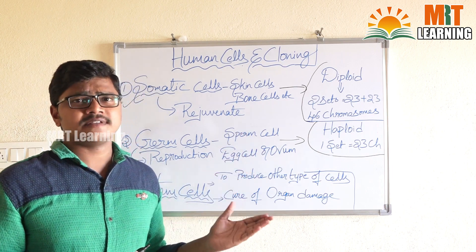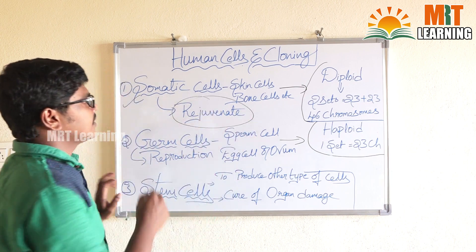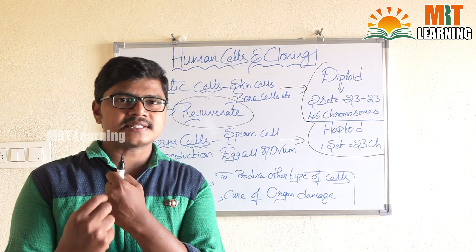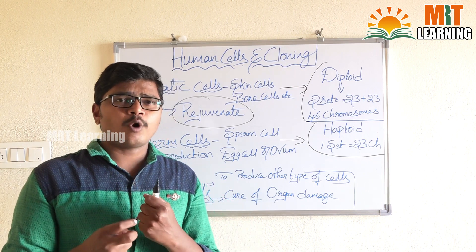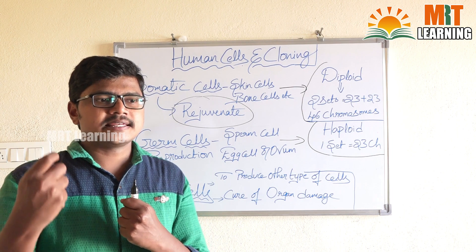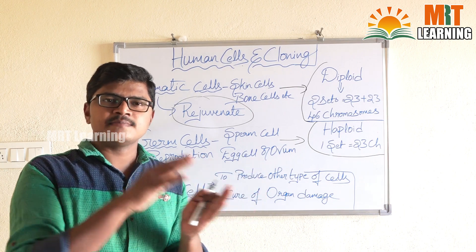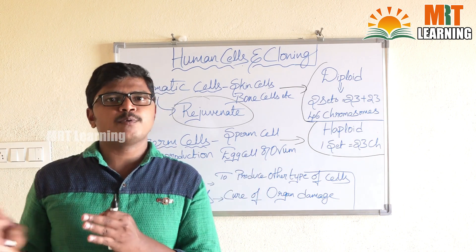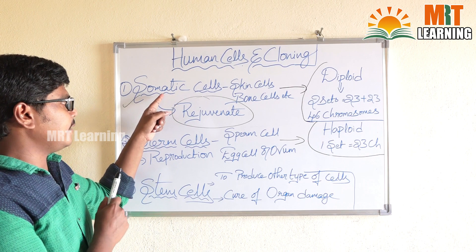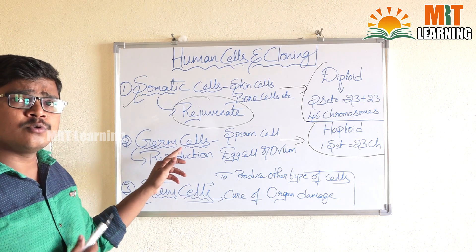What is the use of somatic cells? Somatic cells rejuvenate. For example, if our skin tissue is damaged because of an accident, after some days the same skin tissue will come back — the same skin, not a different skin, will return to its position. This happens because of the rejuvenating nature possessed by somatic cells.